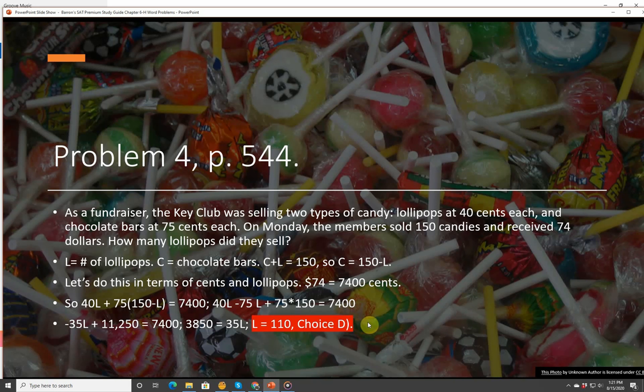We get 40L minus 75L plus 75 times 150 equals 7,400. So we get negative 35L plus 11,250 equals 7,400. Doing the math, you end up with 3850 equals 35L. So L is equal to 110, choice D. Hopefully, this will be on the calculator section.